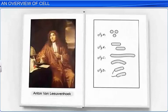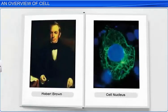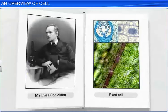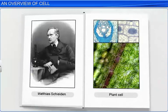Later, Robert Brown expanded on Leeuwenhoek's studies and pointed to the presence of a cell nucleus. In 1838, German botanist Matthias Schleiden examined numerous plant species and concluded that plants have different types of cells which form plant tissues.